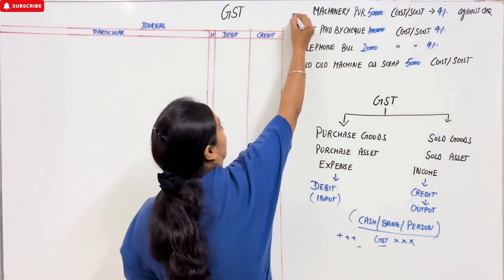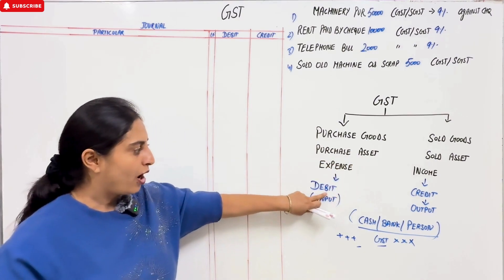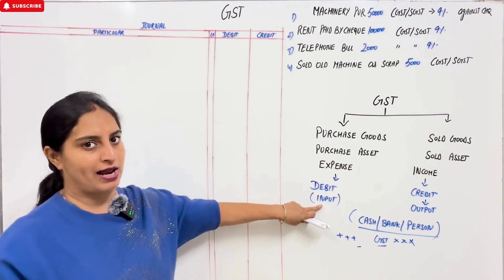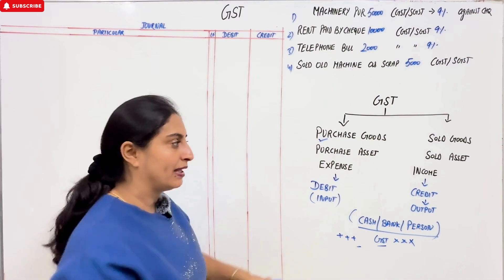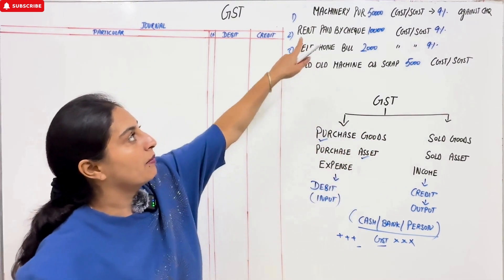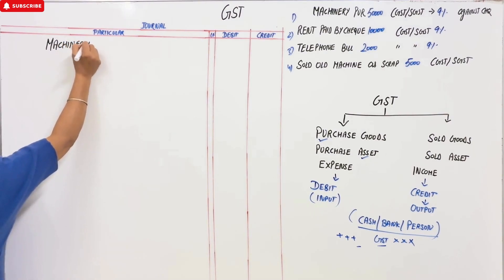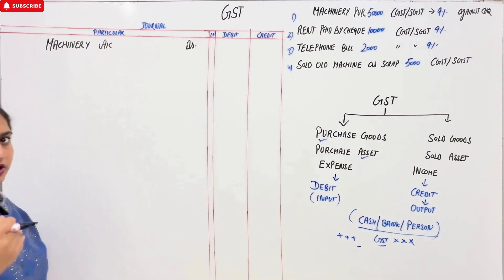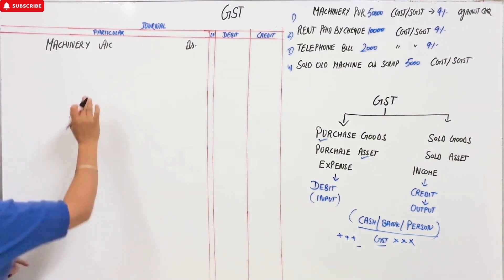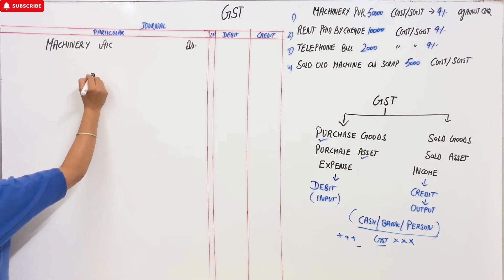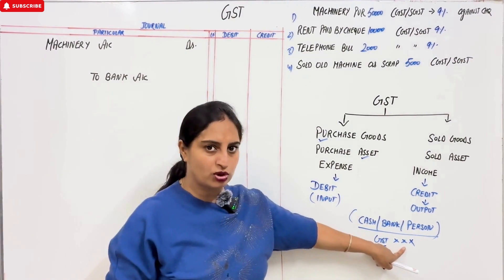The first entry is machinery purchase — you are purchasing an asset, so it will come in debit, and the tax will come in as input. When you purchase goods, you use the purchase account; when you purchase an asset, you name the asset. So the debit entry will be: Machinery Account — Debit. Payment was by cheque, so we write: To Bank Account. Since bank is involved, GST is not shown separately — it is added to the total.